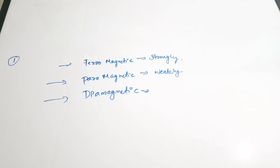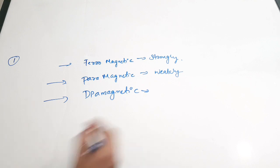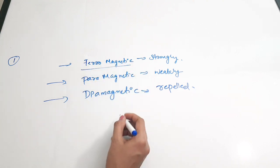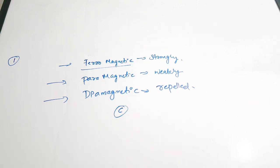Diamagnetic materials are actually repelled by the magnetic field — so they are not attracted, they are repelled. These are the three important classifications: ferromagnetic, paramagnetic, and diamagnetic. The question asks about strongly magnetized materials, which is ferromagnetic. Option D, pure magnet, just refers to a pure magnetic material. The correct answer for the first question is option C, ferromagnetic.